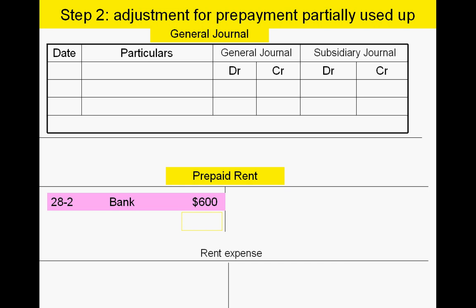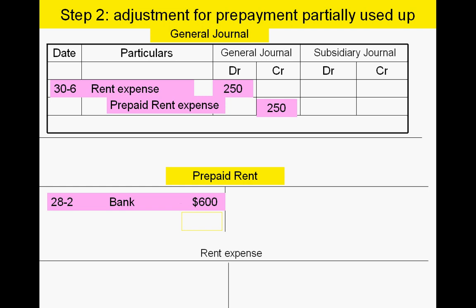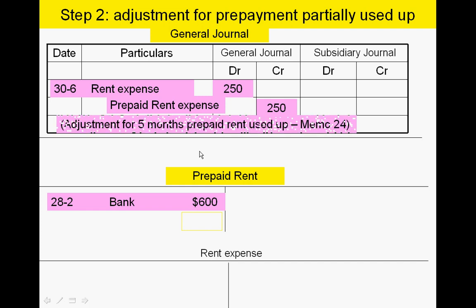Step two is to deal with the amount that's been used up. The golden rule for any balance day adjustment — whether accrued expenses, prepaid expenses, or depreciation — is we always debit the expense, i.e., we have a claim that will reduce our profit and reduce tax. In this case, five twelfths of the year have been used up: 1st of February to 30th of June is five months, and five twelfths of $600 is $250.